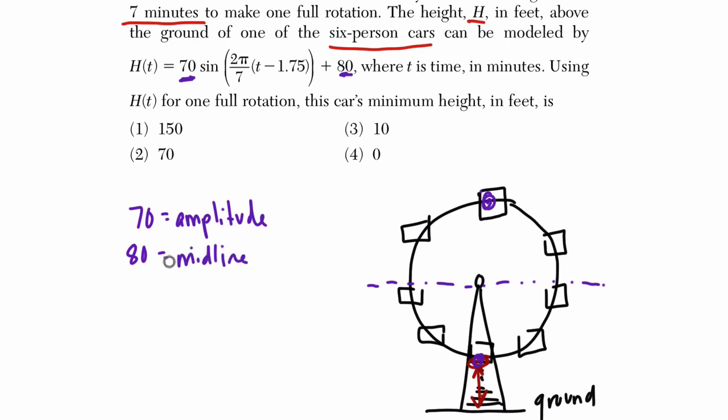But the idea is that the amplitude is 70. So it tells me that you're 70 feet above and below the midline. So if the midline is at 80, the maximum height you can reach is plus 70. And that's up here, that's 150. And the lowest height is minus 70 to down here. And that's going to be at 10. And that's our answer, 10.